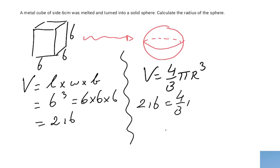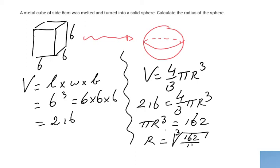Let me just put a little line there in between. Equals 4 over 3 pi r to the power 3. So if I first divide both sides by 4 over 3, I get pi r to the power 3 is 162. So r is the cube root of 162 divided by pi.